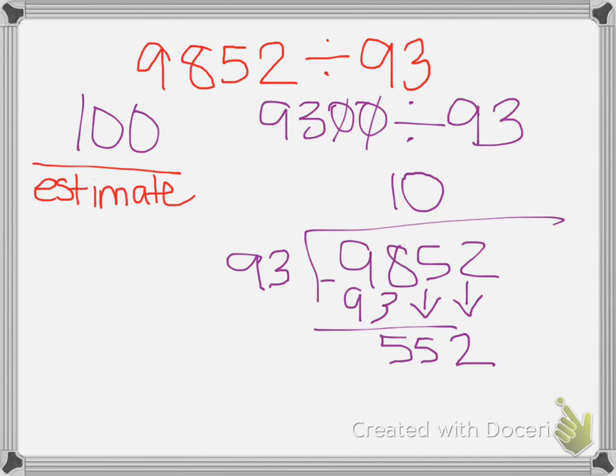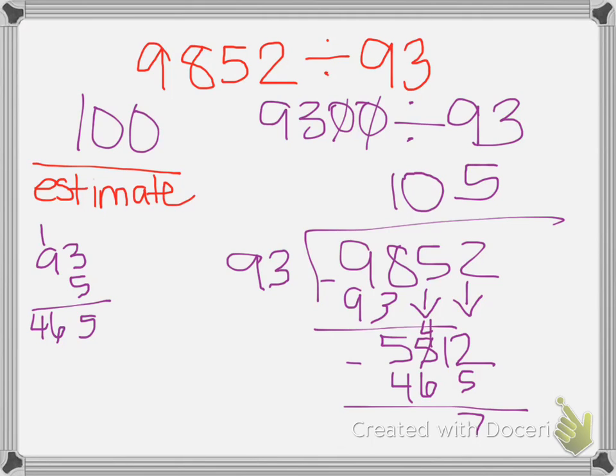93 goes into 552 about 5 times. Then we have to do 93 times 5. 5 times 3 is 15. 5 times 9 is 45, plus 1 is 46. So 465, subtract. 2 minus 5 we can't do, so we have to borrow. 12 minus 5 is 7. 4 minus 6 we can't do, so we have to borrow. 14 minus 6 is 8. So our answer is 105, remainder 87.